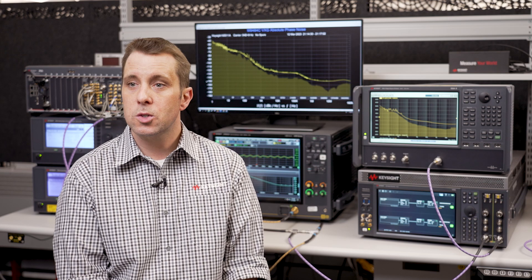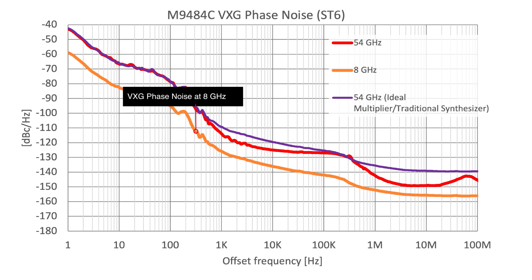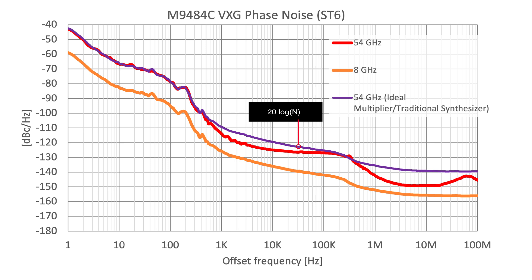Now let's look at the 8 and 54 GHz phase noise data to understand why the VXG is special in terms of ultra-low phase noise performance versus a traditional synthesizer. The orange trace shows VXG phase noise at 8 GHz. Normally, phase noise in a traditional signal generator scales as 20·log(n), where n is the frequency multiplication factor — shown in the purple trace. The VXG uses a proprietary up-conversion scheme to translate phase noise to higher frequencies with minimal LO and mixer impact, shown in the red trace. Close in, the reference dominates and the red and purple traces overlap until about 10 kHz offset, where the VXG's actual measured performance is significantly better than an ideal multiplier or traditional synthesizer.